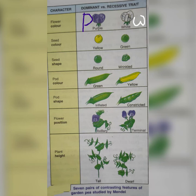Pod shape — inflated is dominant and constricted is the recessive trait. Flower position — axillary is dominant and terminal is recessive. And plant height — tall is dominant and dwarf is recessive. So these 7 pairs were studied by Mendel.